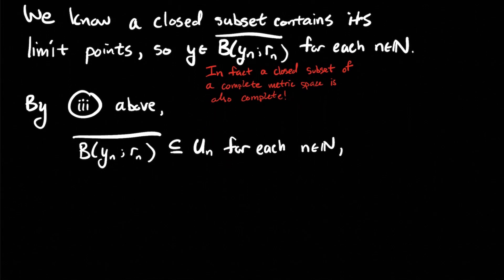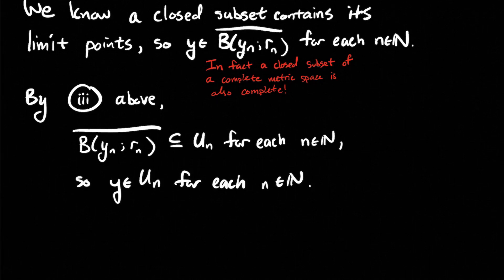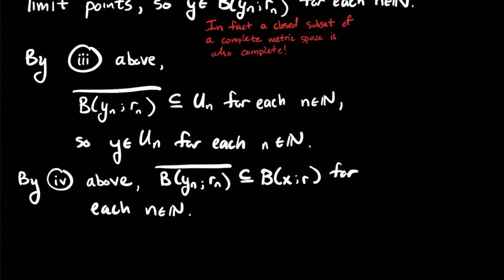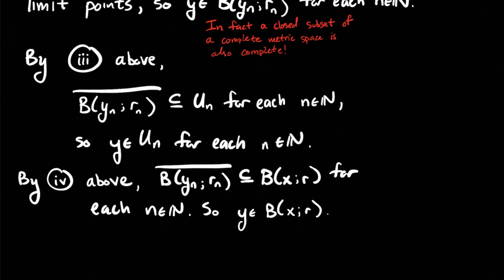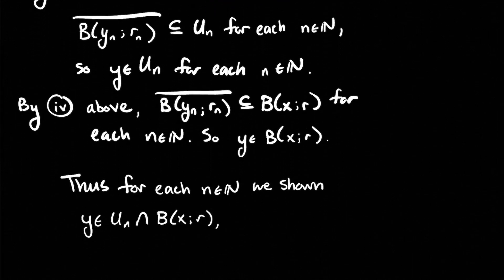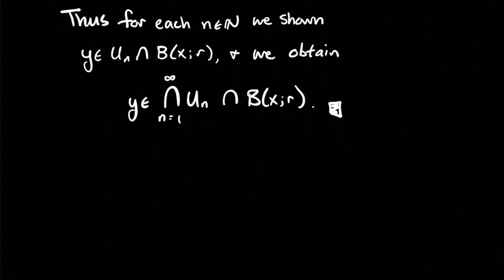By observation (3), the closure of the ball centered at Y_n of radius R_n is in the dense open set U_n for each n, so Y is also in each U_n. By observation (4), the closure of the ball centered at Y_n is in the ball centered at x of radius R, so Y is in that ball too. Putting these together, Y is in U_n and the ball centered at x of radius R for each n, meaning Y is in the intersection of all U_n's and the original ball. That's exactly what we set out to prove, showing the intersection of the U_n's is dense in X.